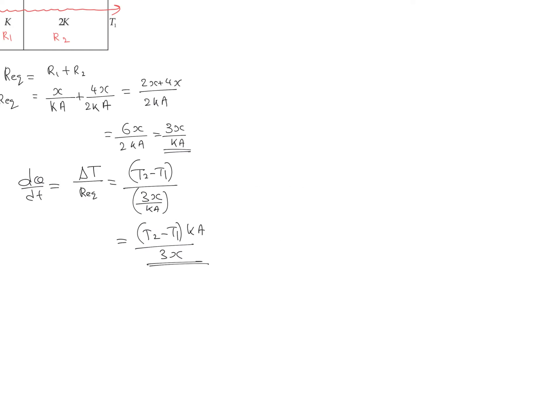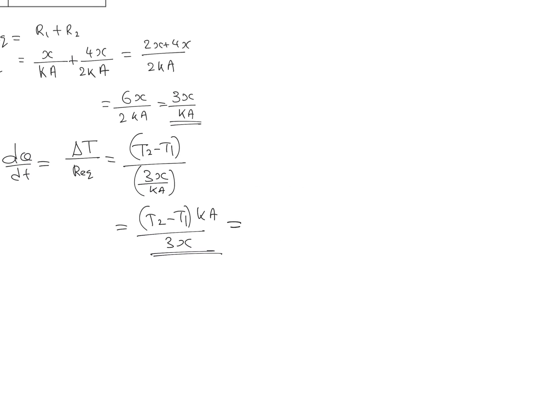According to the question, this is equal to (T2-T1)·K·A/x times f. We need to find the value of f. We can cancel these terms - K, A, and x - so we get f equals 1/3.